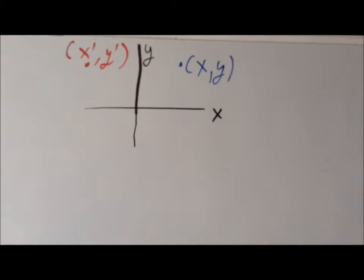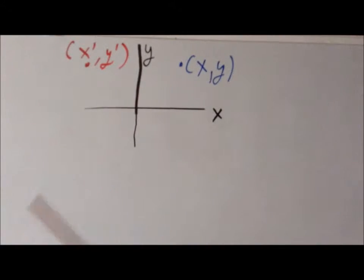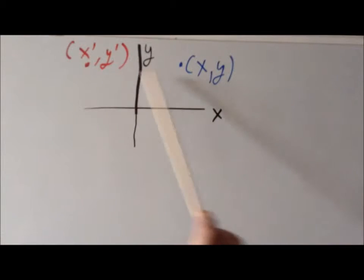So for example, we can refer to one of the generic vertices just as the ordered pair x, y. And what we're interested in is how the symmetry operation moves that point to some other point. We'll call the transformed point — the destination — x prime, y prime.